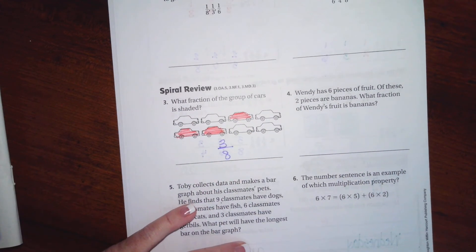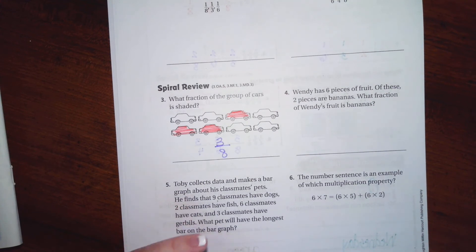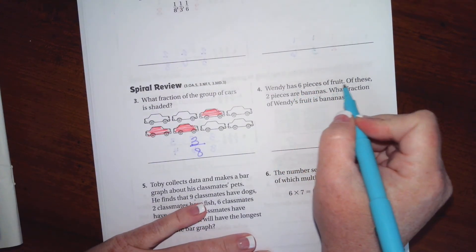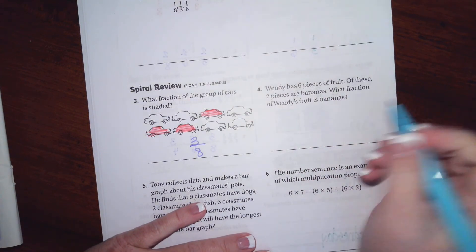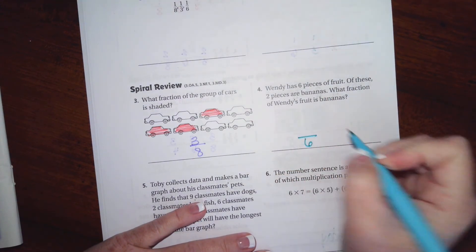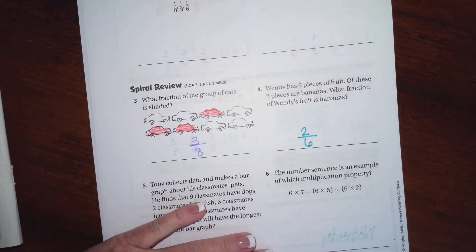Wendy has six pieces of fruit. Of these, two pieces are bananas. Which fraction of Wendy's fruit is bananas? Well, there's six pieces all together and two of those are bananas. Can't get a whole lot easier than that, guys.